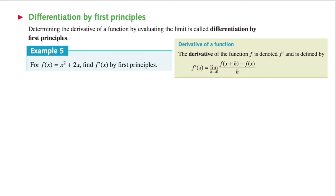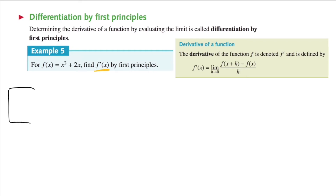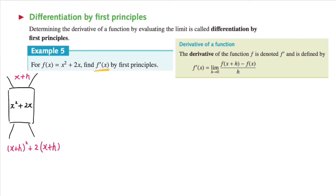In this example, we're going to use the first principle to find the derivative of this function. Since we know the first principle, we can just substitute the values in and find the derivative. Think back to the number machine type of question — you have your inputs and outputs, and the rule is defined by this function. When the input is x plus h, every time I see x, I'm going to replace it with x plus h.